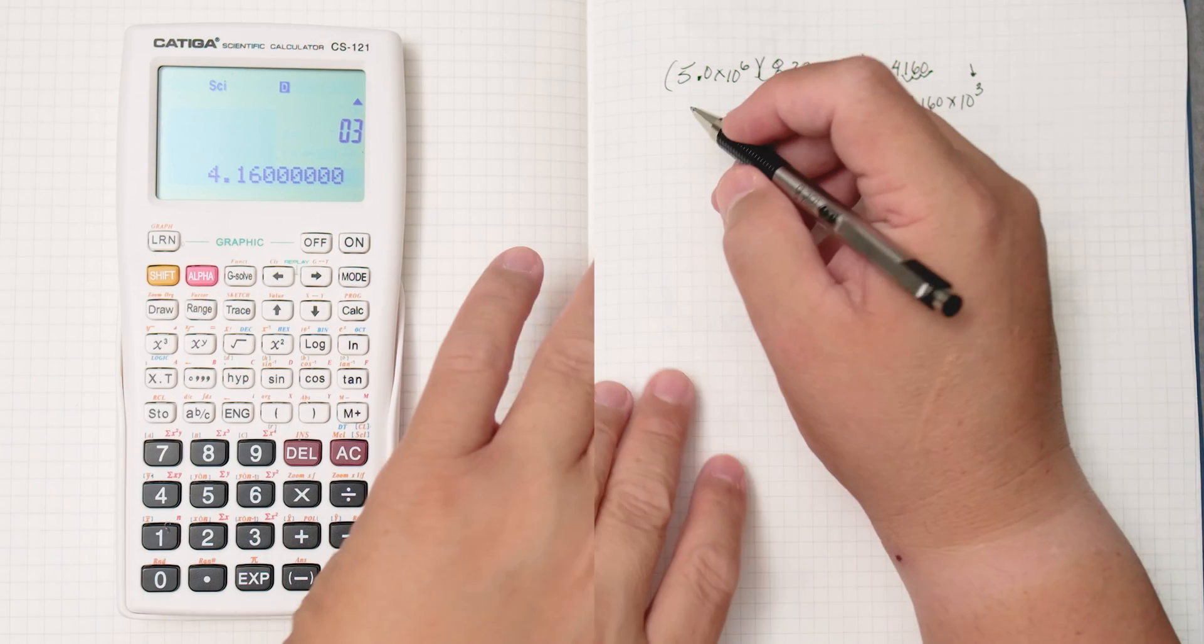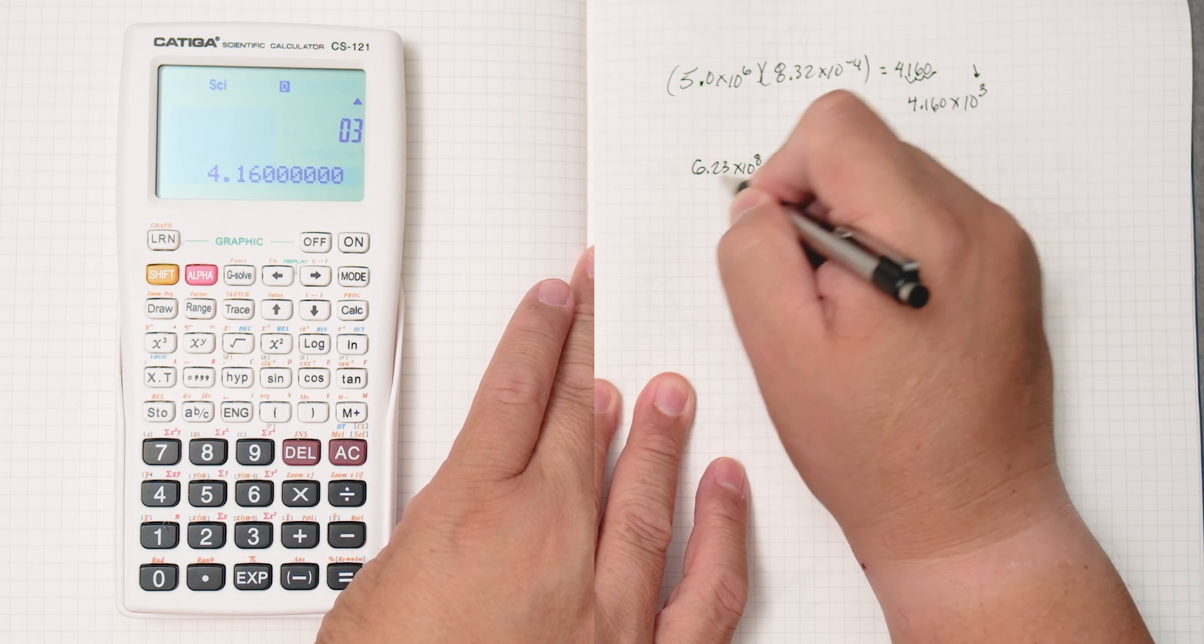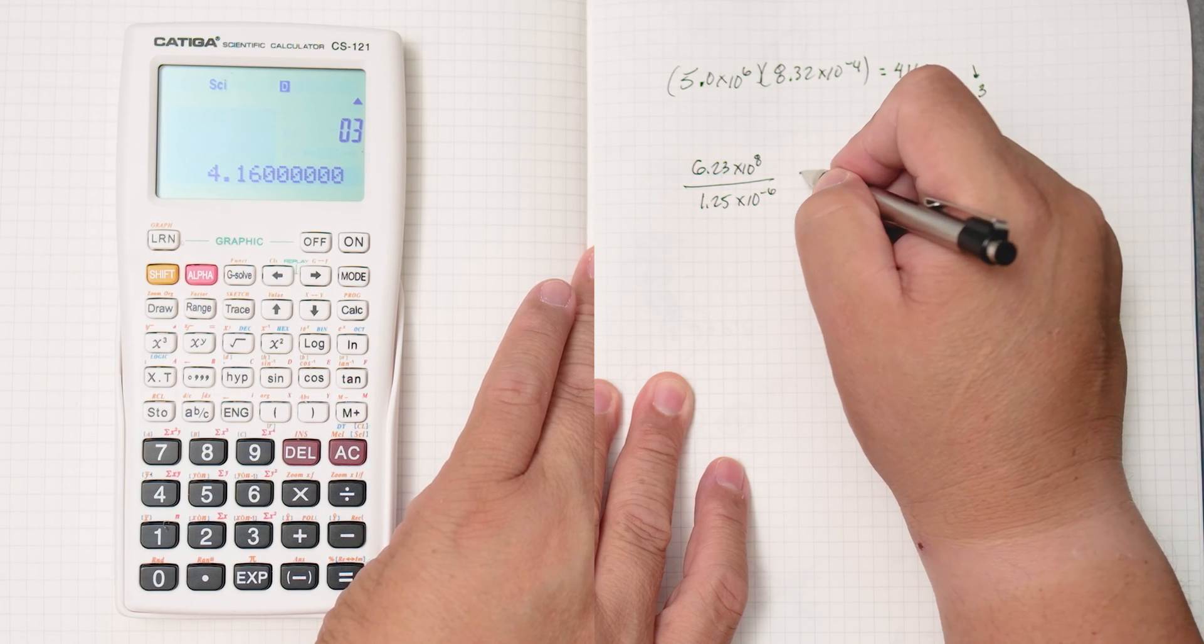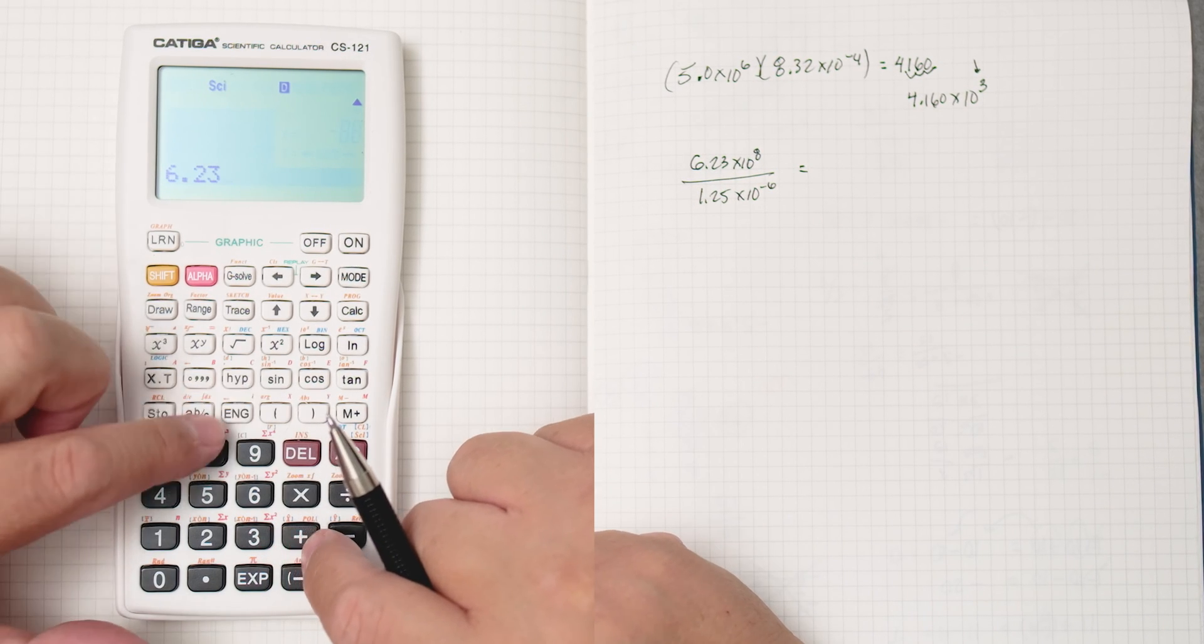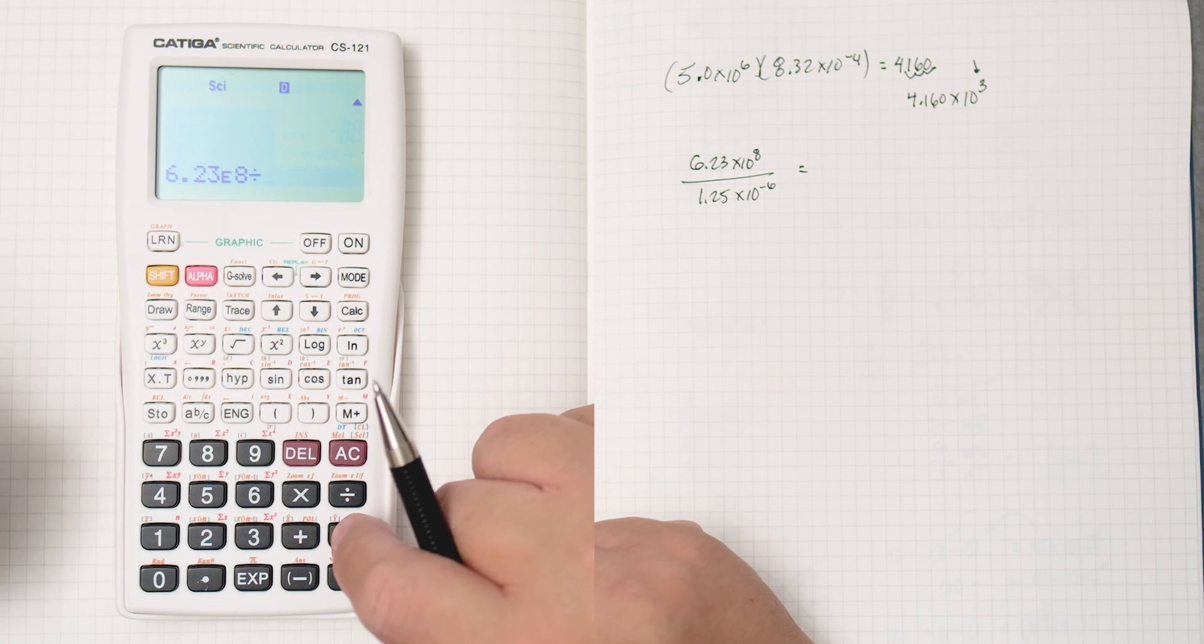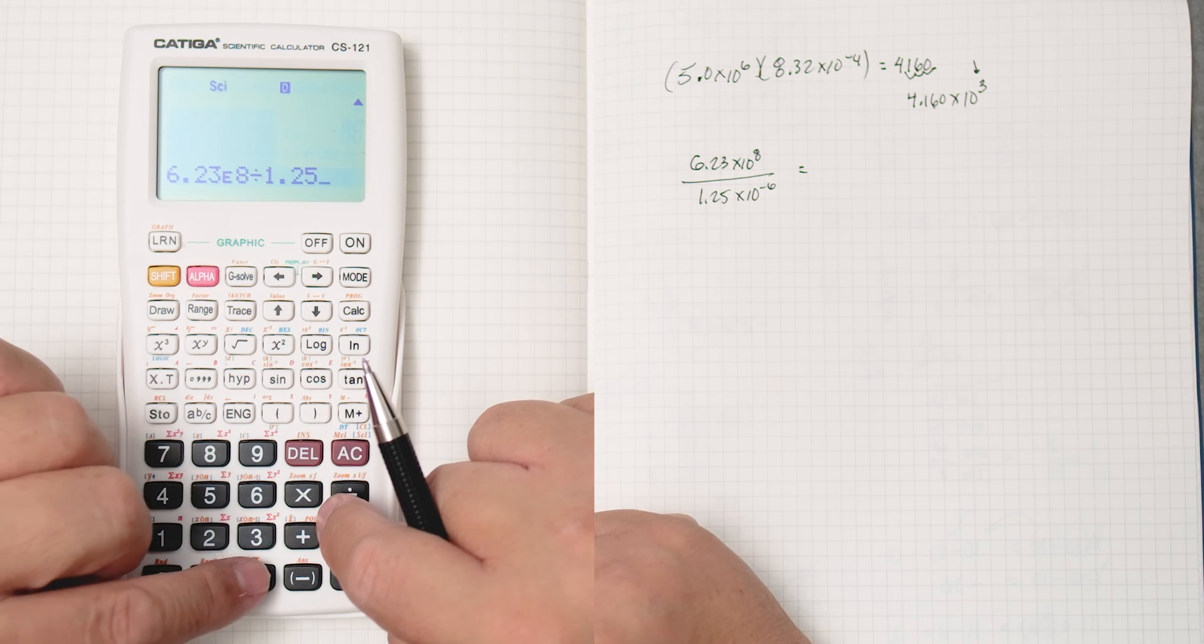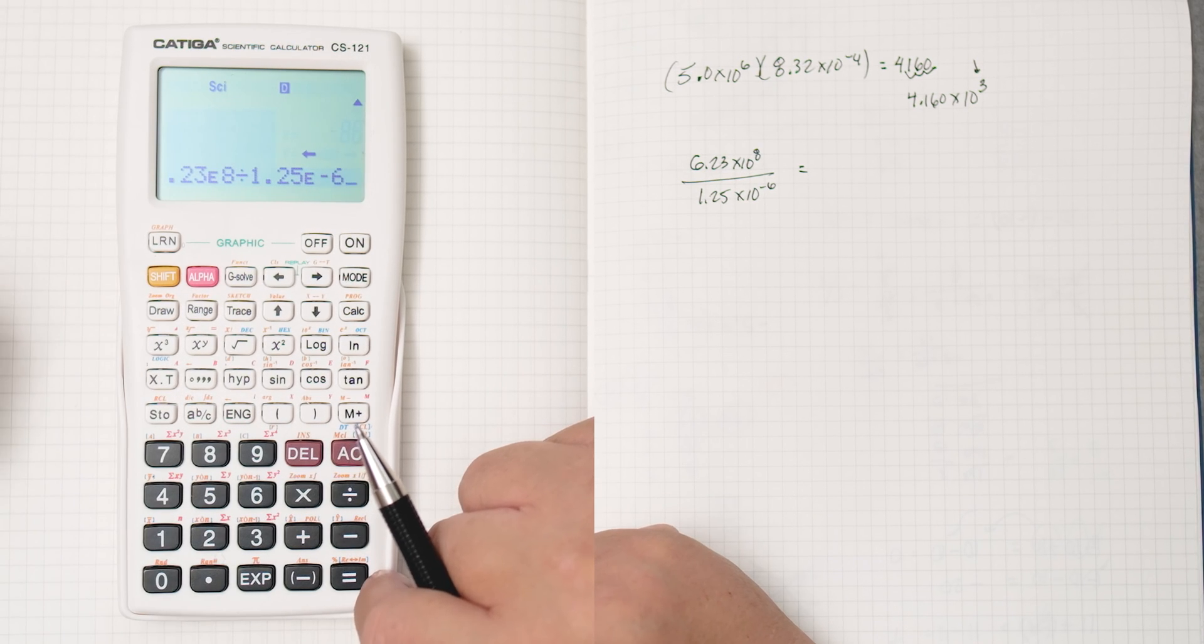Okay, let's do division, something like 6.23 times 10 to the 8th divided by 1.25 times 10 to the minus 6. 6.23 to the power, which is this one right here, times 10 to the 8th, divided by, and then we're going to go 1.25 and then times 10 to the minus 6. And then we press equals.